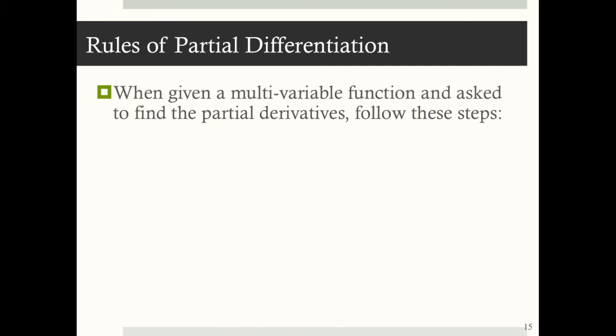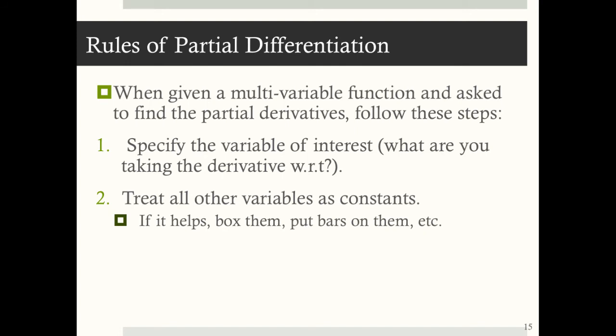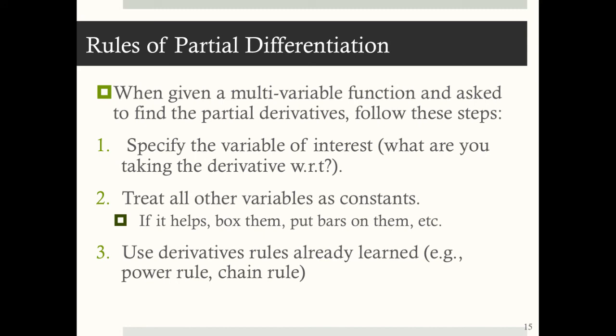Rules of partial differentiation: when given a multivariable function and asked to find partial derivatives, follow these steps. First, specify the variable of interest — that is, what are you taking the derivative with respect to? Second, treat all other variables as constants; if it helps, box them or put bars above them. Finally, use the derivative rules you already know — the power rule, chain rule, and sum and differences rule — to find the partial derivative.